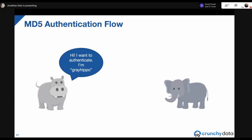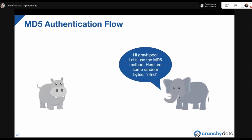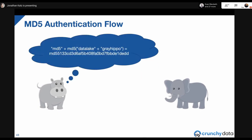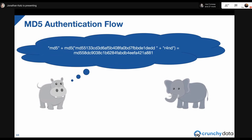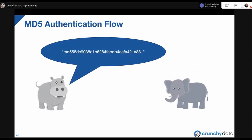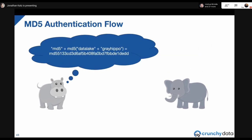Gray Hippo logs in using the MD5 method: Gray Hippo says 'I'm Gray Hippo,' Postgres replies 'we'll use MD5, here are some random bytes.' Gray Hippo computes the MD5 hash of the password plus username ('data lake' + 'greyhippo'), prepends 'md5,' then takes that hash, appends the random nonce, takes the MD5 hash of that, and prepends 'md5' again. That's what Gray Hippo sends to Postgres. Postgres has the original MD5 hash stored, so it can verify — if anything changes, like the wrong password, the final hash won't match.